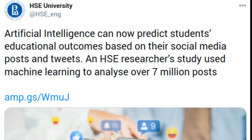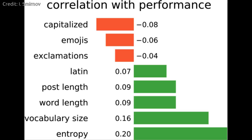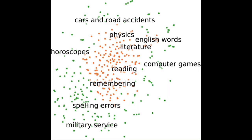Smirnov has created a computer model that can distinguish high academic achievers from lower ones based on their social media posts. The prediction model uses a mathematical textual analysis that registers users' vocabulary, characters, and symbols, post-length and word-length. Every word has its own rating — a kind of IQ. Scientific and cultural topics, English words, and posts that are longer in length rank highly and serve as indicators of good academic performance. An abundance of emojis, words or whole phrases written in capital letters, and vocabulary related to horoscopes, driving and military service indicate lower grades in school.